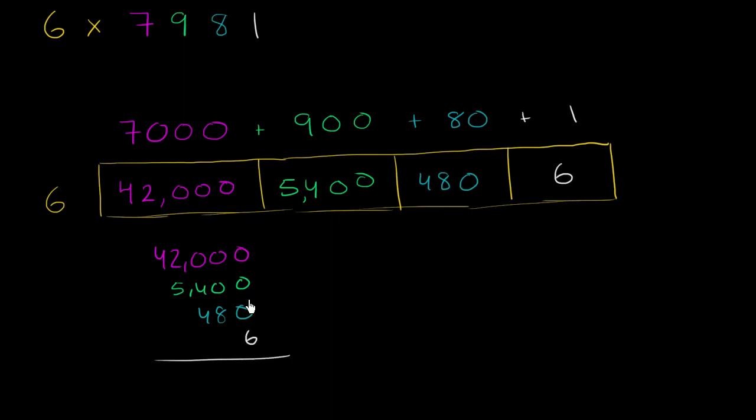And we get, let's see, in the ones place, we just have a 6. In the tens place, we just have an 8. In the hundreds place, 4 plus 4 is 8. In the thousands place, 2 plus 5 is 7. And then finally in the 10 thousands place, we still have a 4. So we get 47,886. So this is equal to 47,886.